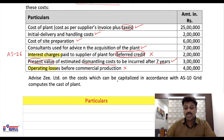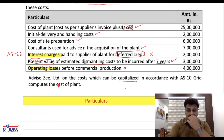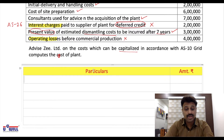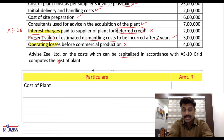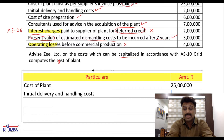Now advise Z Limited on the costs which can be capitalized in accordance with AS 10, and compute the cost of the plant. Make a format with two columns: Particulars and Amount. Cost of the plant itself will be included — that is 25 lakhs. Taxes: 20 lakhs. Initial delivery and handling costs: 25 lakhs.